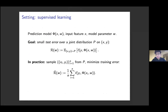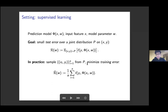We start in a supervised learning setting where we have a prediction model φ(x, w), where x denotes the input feature and w denotes the model parameter. For each input feature x there is a label y, and we want the output of the model to match the label y — formally we want a small test error. We assume there is an underlying joint distribution p on the feature x and label y, and the test error is defined as the expected loss on this distribution, where l denotes the loss function.